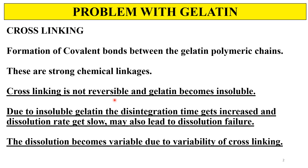The formulation may be a soft gelatin capsule or hard gelatin capsule. Due to this increased disintegration time, the dissolution rate gets slower, which may also lead to dissolution failure. This crosslinking is always a variable process — it is not uniform. Thus, the dissolution becomes variable due to the variability of the crosslinking.